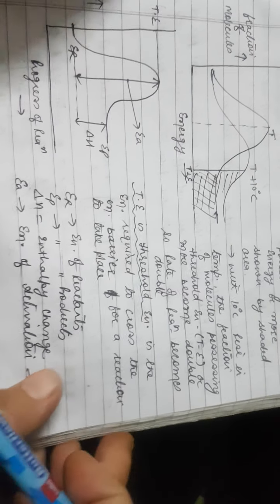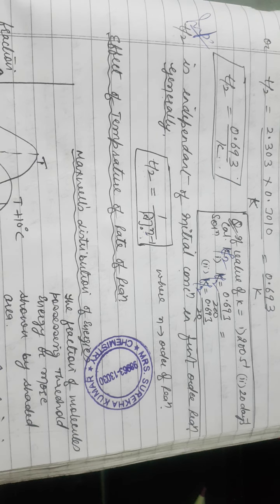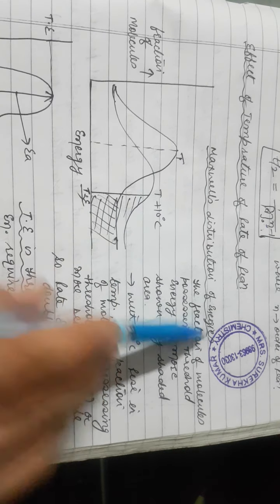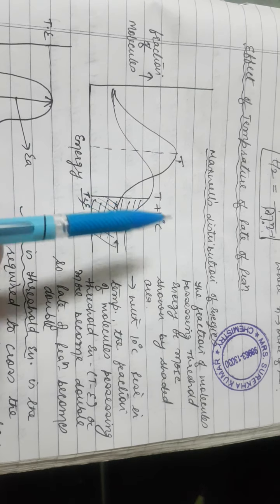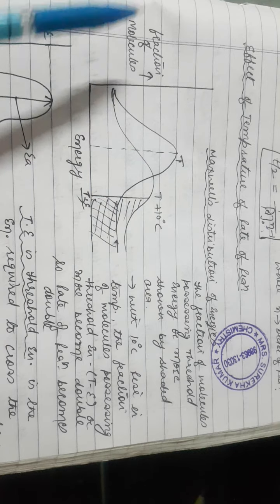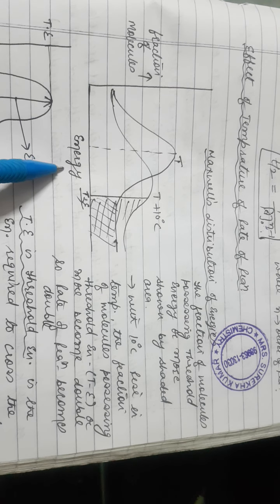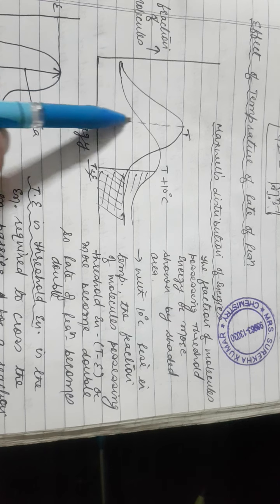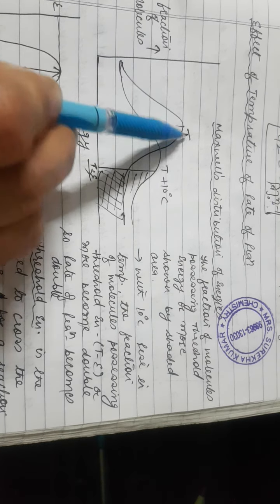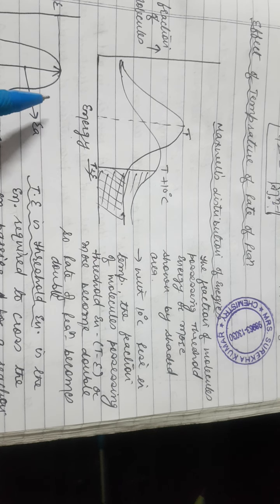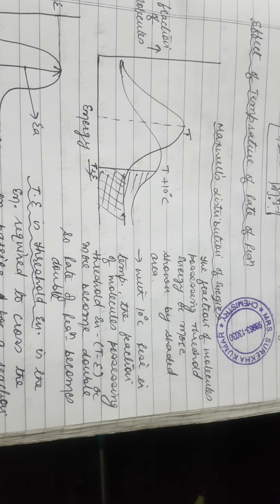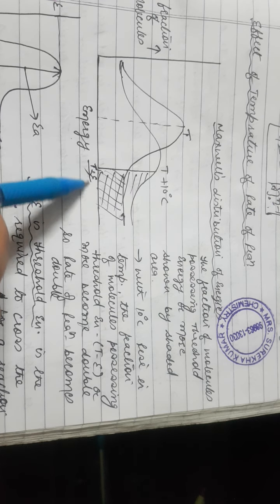Our next topic is the effect of temperature on rate of reaction. To understand this, we need to look at Maxwell's distribution of energies. In this graph, the x-axis is energy and the y-axis is the fraction of molecules. Very few molecules have very low energy; the most molecules possess a certain intermediate energy (the peak); and very few molecules have very high energy.